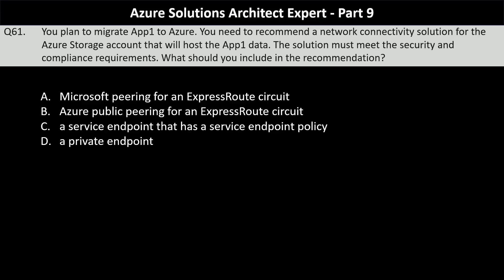Next question. You plan to migrate App 1 to Azure. You need to recommend a network connectivity solution for the Azure storage account that will host the App 1 data. The solution must meet the security and compliance requirements. What should you include in the recommendation? Your options are: Microsoft peering for an ExpressRoute circuit, Azure public peering for an ExpressRoute circuit, a service endpoint with a service endpoint policy, or a private endpoint.